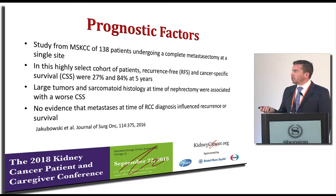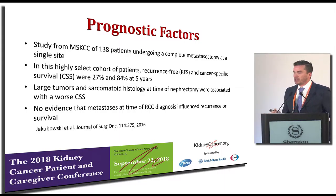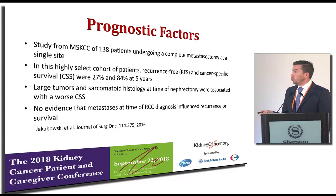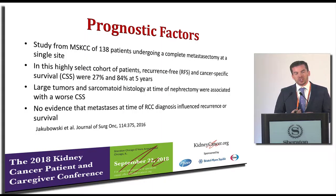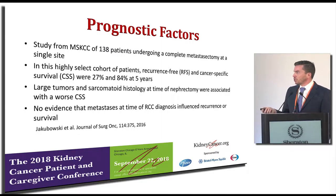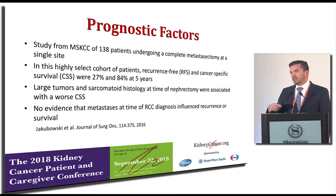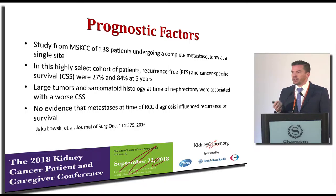This paper from Memorial Sloan Kettering looked at 138 patients with metastatic kidney cancer undergoing single-site metastasectomy — meaning they only had one site where cancer had spread. They found that patients in terms of recurrence-free and cancer-specific survival actually did fairly better than expected. 84% of patients at five years had cancer-specific survival. Factors associated with how patients did were large tumors and sarcomatoid histology — a very aggressive subtype of kidney cancer. Importantly, there was no evidence that having metastasis at the time of diagnosis was any worse than developing a metastasis afterwards.